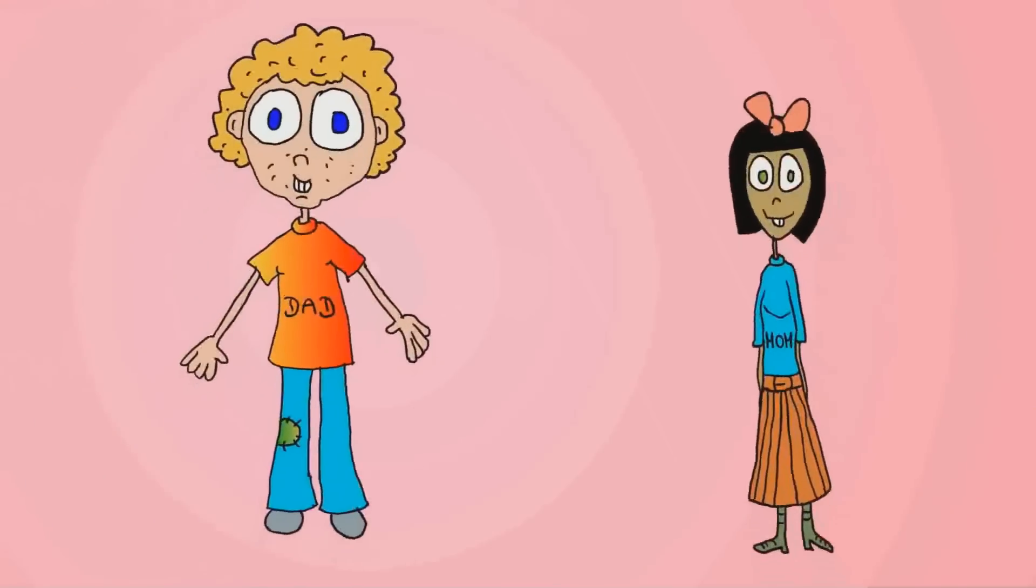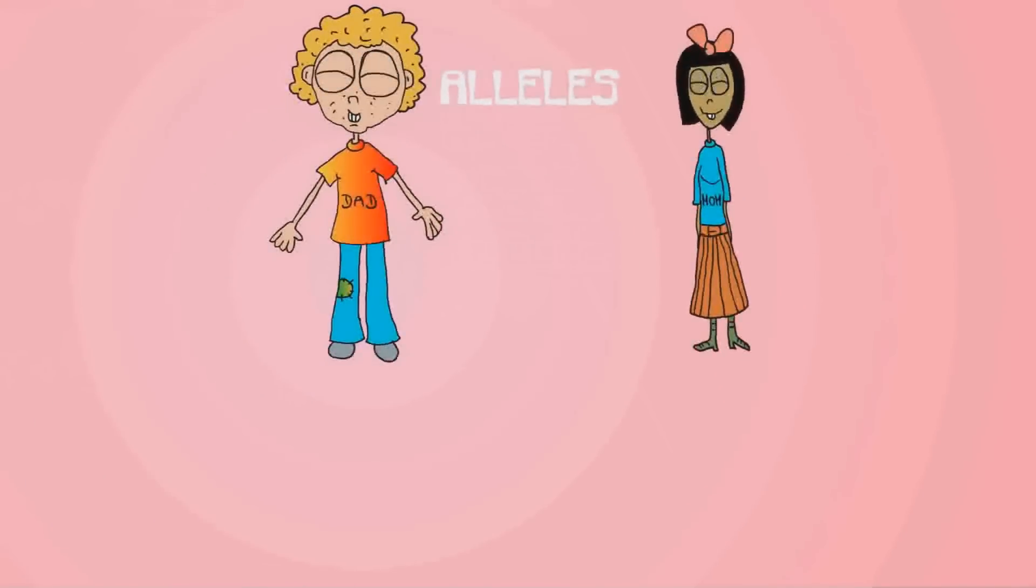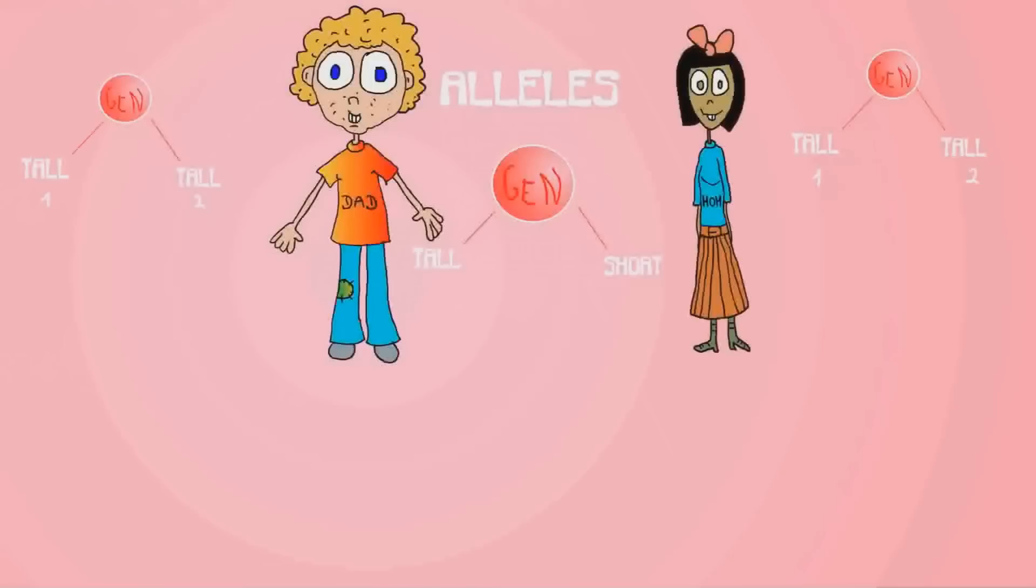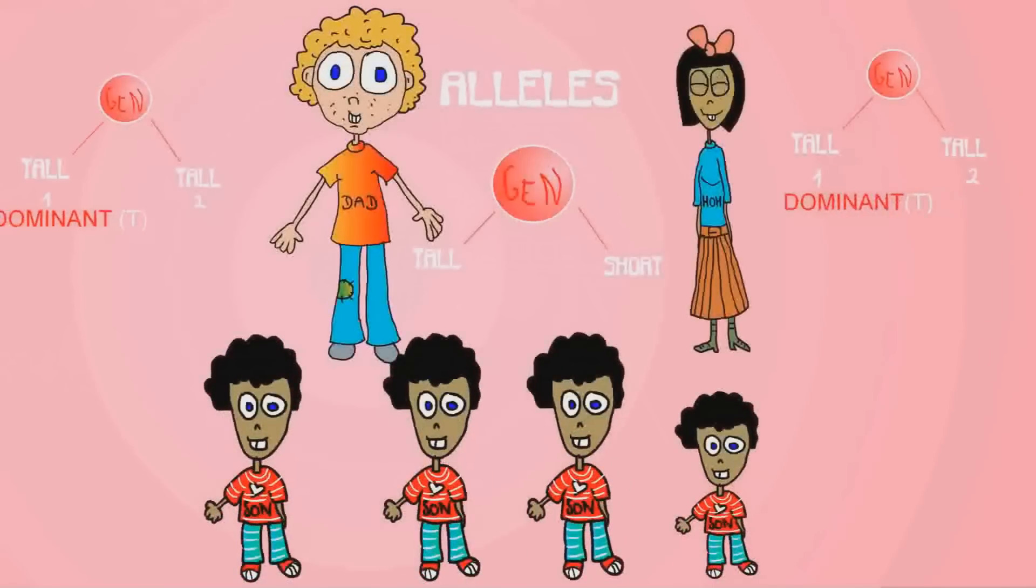Each parent has alleles - an allele is basically an option a gene has, for example tall or short. Each parent has two alleles and gives one allele at random to the offspring. A parent can have a dominant or recessive allele.